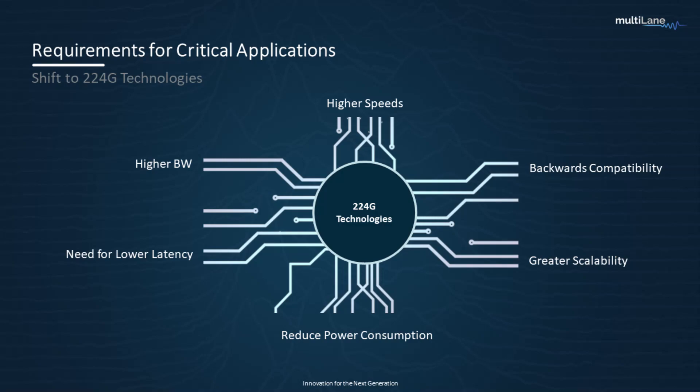To catch up with this demand, we will have to shift to 224 gig serdes. Because 224 gig covers higher speeds, higher bandwidth, it lowers transmission latencies, reduces the cost per bit, ensures backwards compatibility in terms of form factor, and ensures scalability.